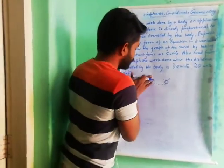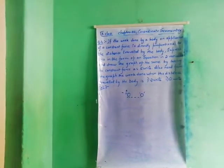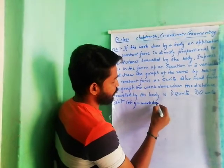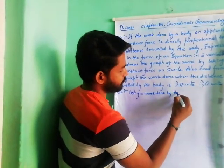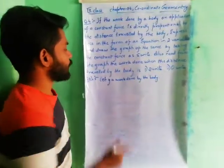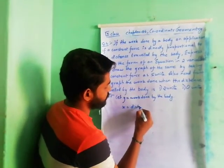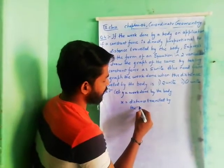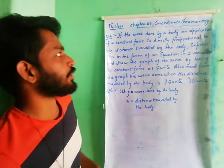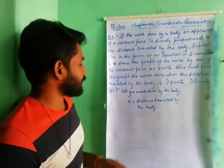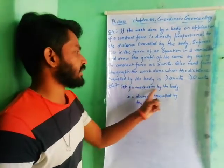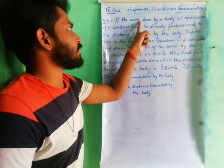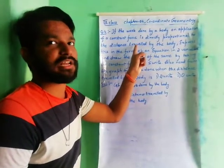First of all, we let y equal to work done by the body, and x is denoted as distance travelled by the body. This theoretical question we have to express as a linear equation in two variables. So one variable is distance travelled by the body and another variable is work done by the body.